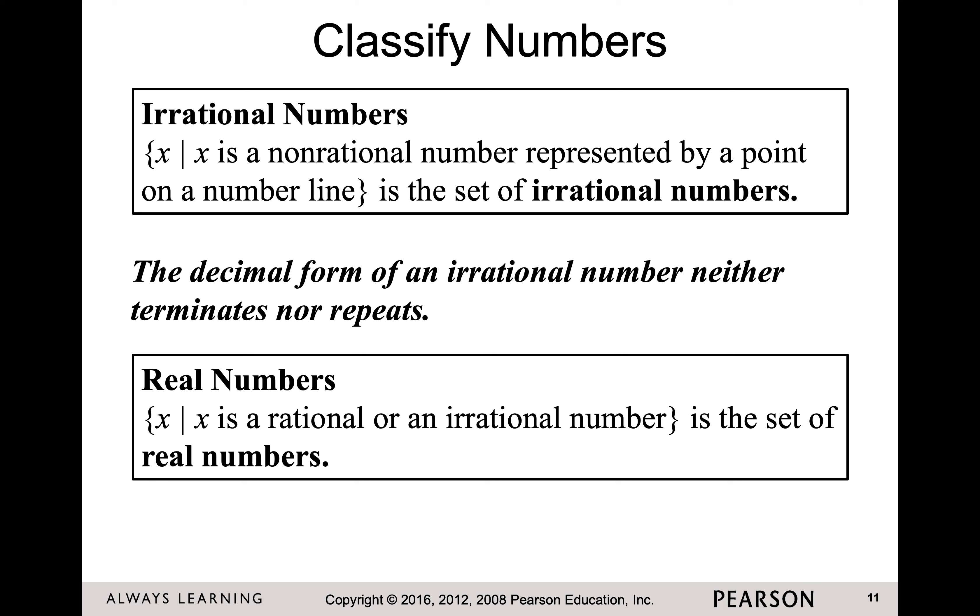Real numbers is the set of all numbers that are rational or irrational. So now we have zero is natural, whole, integer, and real. We have negative one, who is an integer because it's negative. It's rational because I can write it as negative one over one. And now it's real. Then we have positive two, which is going to be natural, whole, integer, rational, and real. So take a minute, pause the video, and think through those examples again.